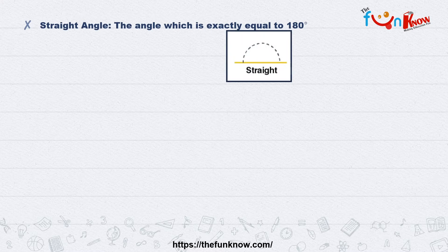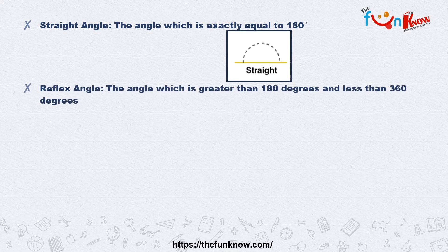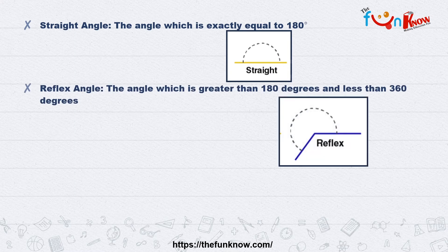Then there is something known as straight angle. When it is forming a straight line — an angle which is exactly equal to 180 degrees — then it is known as straight angle.